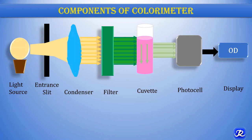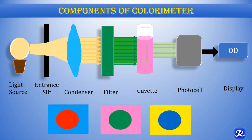An important question is why we use complementary color filters. In this picture, a green color filter is used for a solution having purple color — these two are complementary colors. The aim of using a complementary color filter is to facilitate maximum absorption. So when using a colorimeter, depending on the color of the solution, we adjust the filter accordingly. For example, for a light blue color, a red filter is used; for purple, a green filter is used; for yellow, a blue filter is used. Using the complementary color facilitates maximum absorption and allows us to obtain the OD.